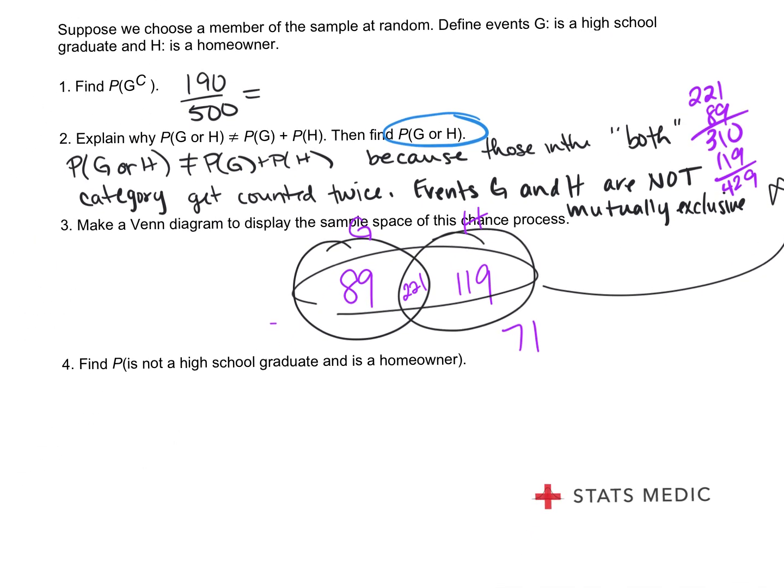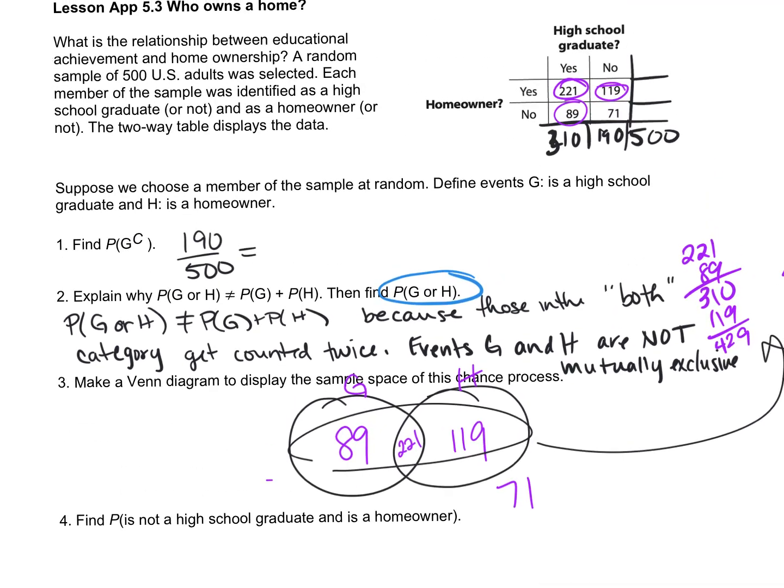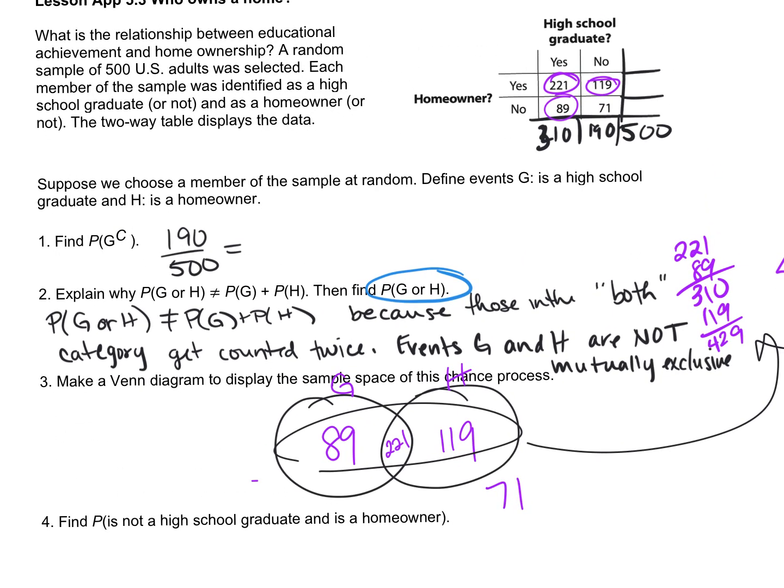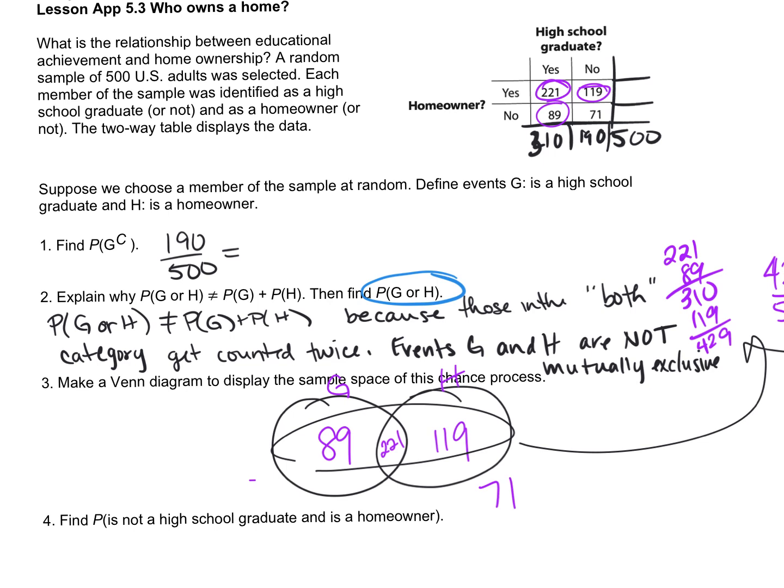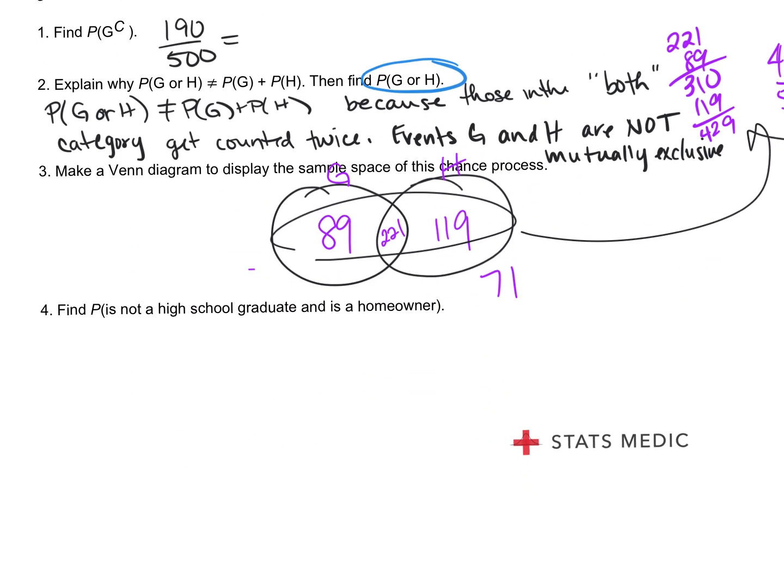Then the last question is, find the probability that someone is not a high school graduate and is a homeowner. So that's no to graduate and yes to homeowner. How many is that? No to graduate, yes to homeowner, 119. So that will be 119 out of 500 and you can get your decimal.